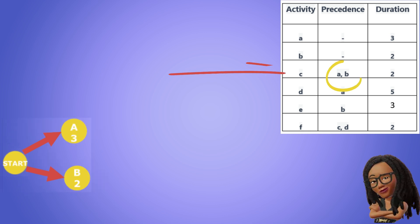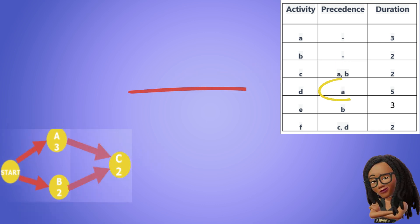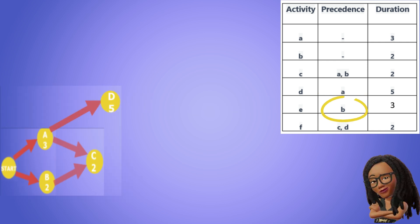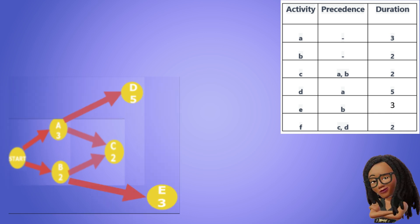C has both A and B as predecessors, so we connect them like this. D has only A as predecessor. And our last activity, F, has both C and D as predecessors.